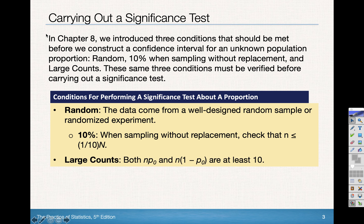Condition three is large counts: we need our sampling distribution to be approximately normal. In order for that to happen, you need n times p-naught and n times 1 minus p-naught both to be greater than 10. We call it p-naught because this is our null hypothesis value, h-naught. We are assuming the sampling distribution is shaped around the population parameter, and we assume the null hypothesis is true — that's why it's p-naught.